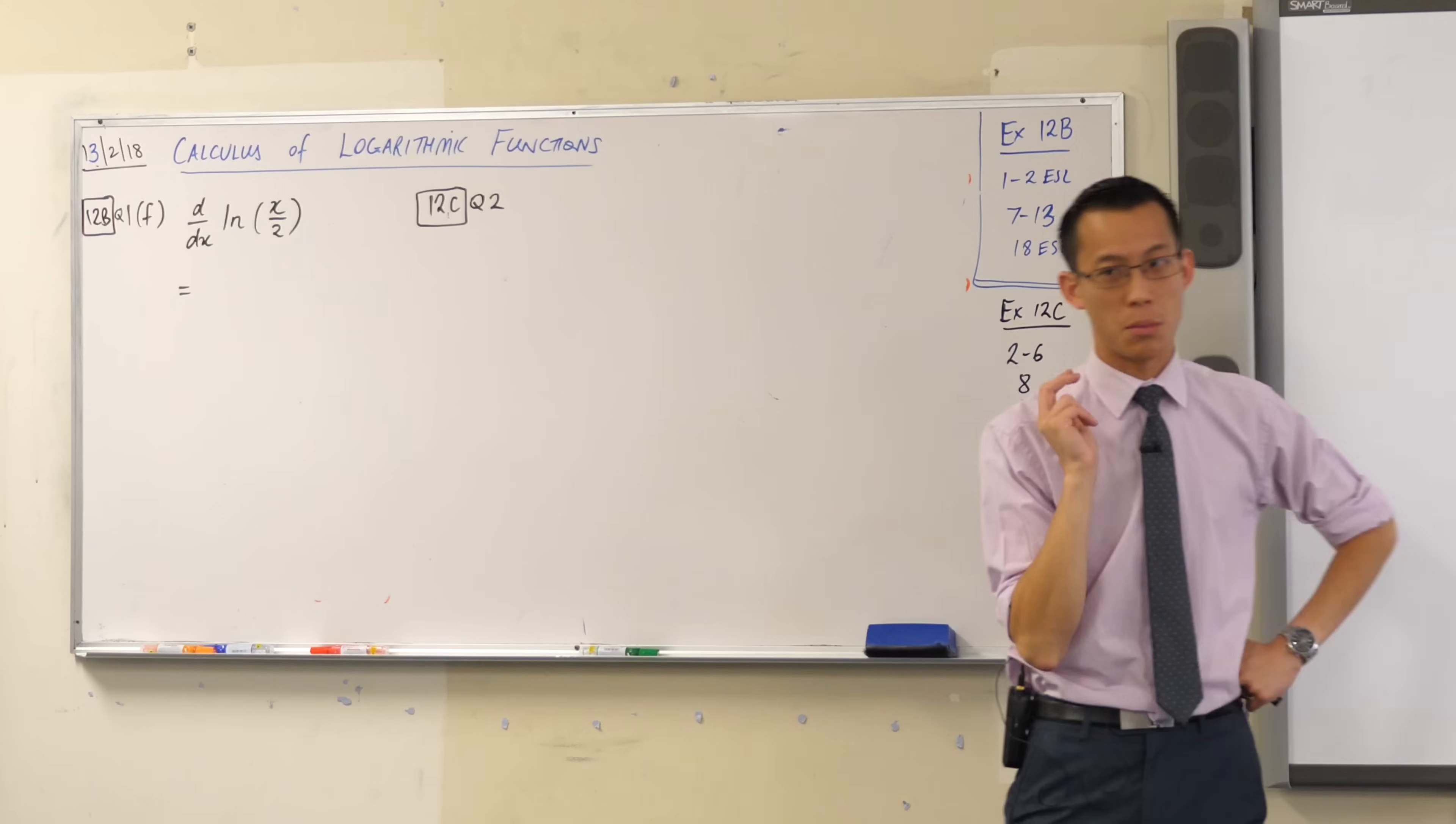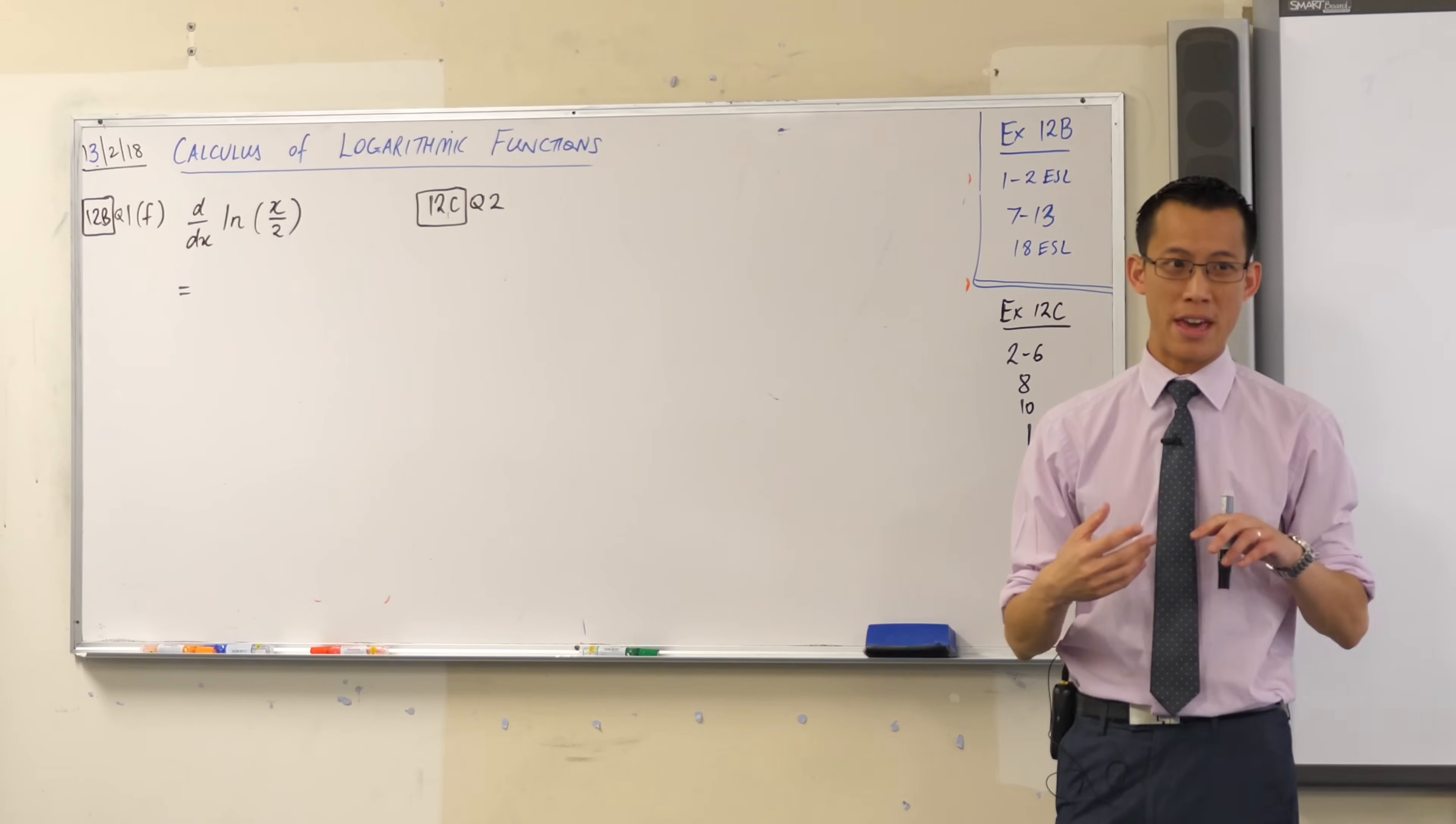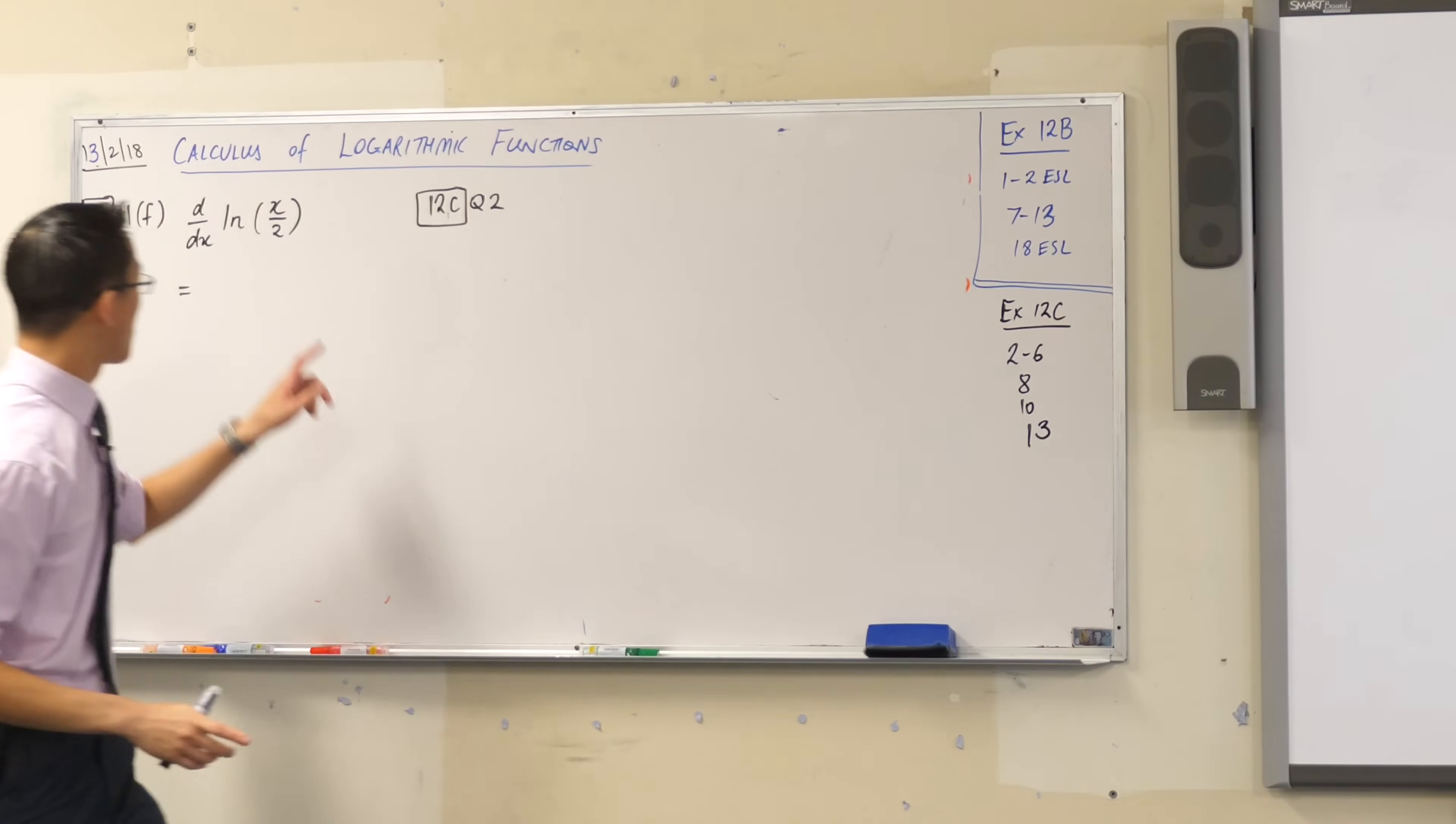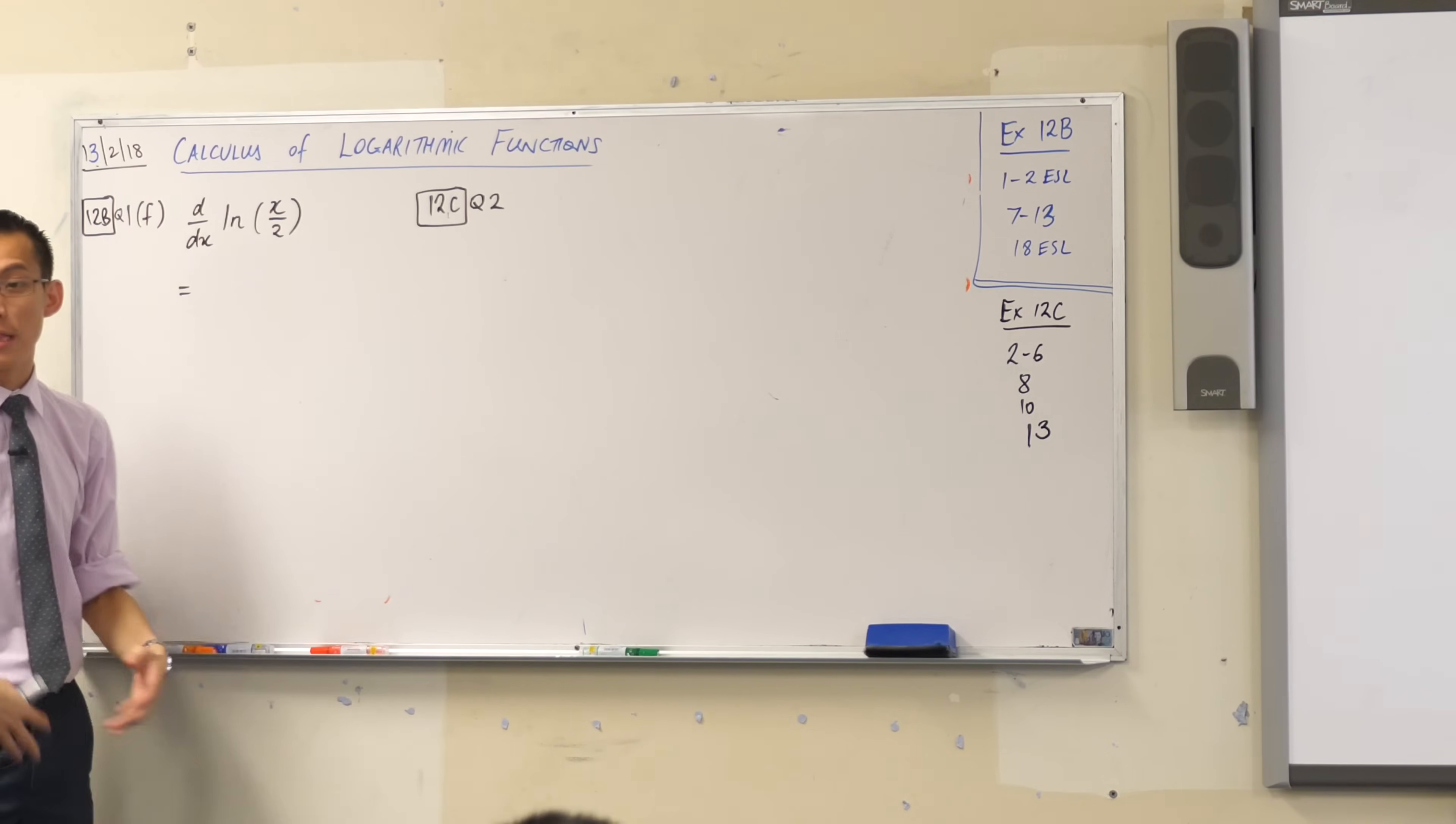Now there are two ways to do this question, I'm going to show you both in a second. First I'm going to start you off with the way that's a little sort of a scenic route. The scenic route is x on 2 is not just regular x, it's a function of x, I've done something to it. So therefore one of my instincts is I guess I could use chain rule on this, it's a function of function. Log of, that's a function. x on 2, that's also a function.